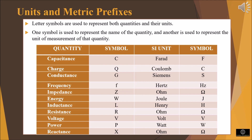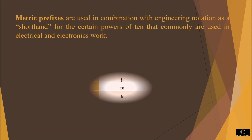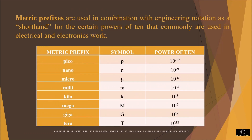Let us consider some examples. For frequency, the symbol is f, the unit is hertz, and the symbol of the unit is Hz. For energy, the symbol is W, the unit is joule, and the symbol is J. For voltage, the symbol is V and the unit is volt. Metric prefixes are used in combination with engineering notation as shorthand for certain powers of 10 commonly used in electrical and electronic work.